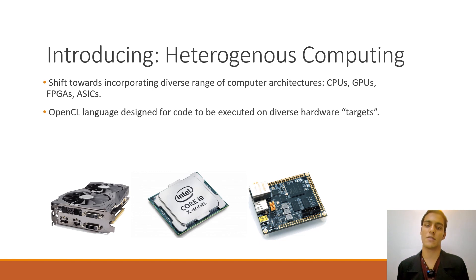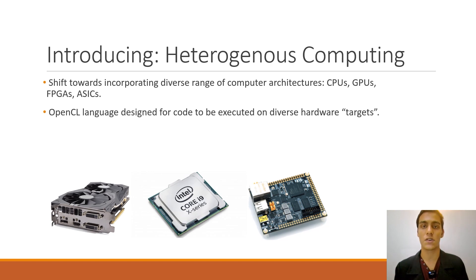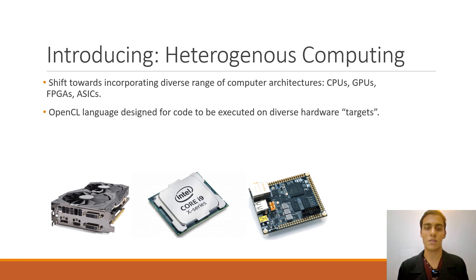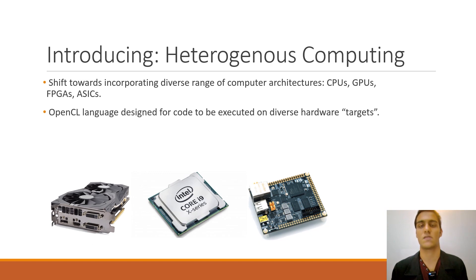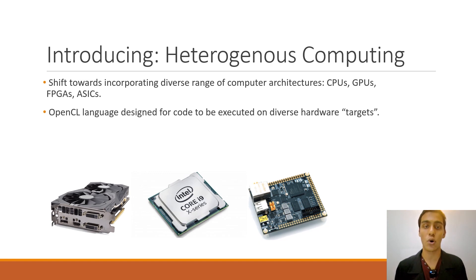The first trend in supercomputing is that high performance computing systems are increasingly incorporating a diverse range of computer architectures. Older supercomputers used to consist of hundreds or maybe thousands of traditional CPUs, but modern supercomputers are aggregating those traditional CPUs with FPGAs, GPUs, ASICs, system on chips, and all of those new technologies. OpenCL by its language design was designed to support all of these heterogeneous architectures.